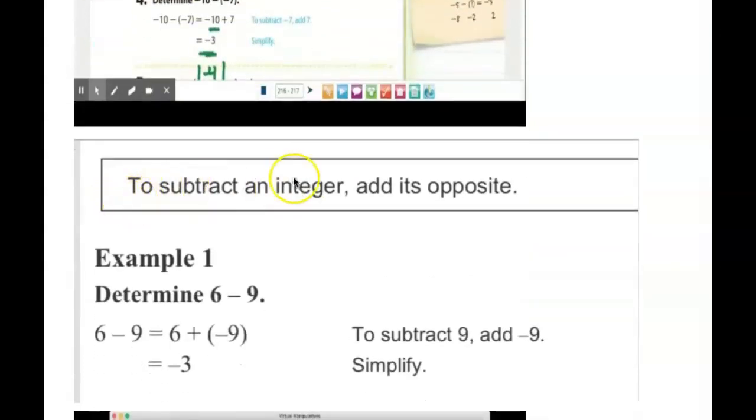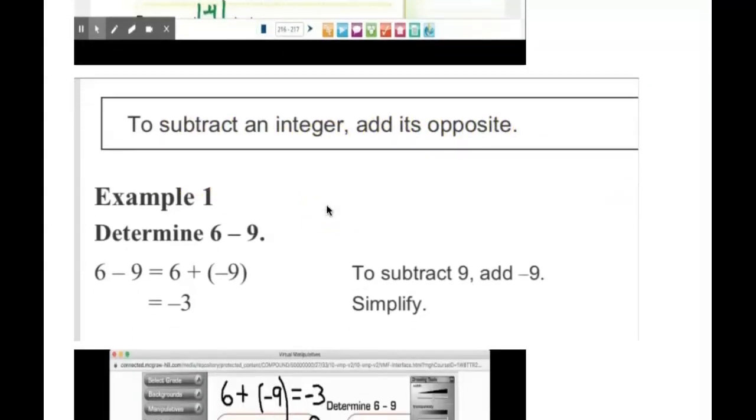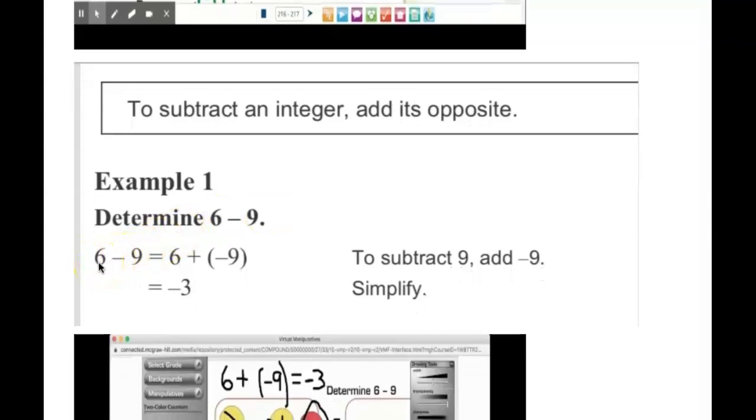The key phrase is to subtract an integer, you add its opposite. That's called additive inverse. Here's an example: if you have the question 6 - 9, we're going to change that to the equivalent expression of 6 + (-9). With negative 9 having a larger absolute value, the answer will be negative. 9 - 6 is 3, so the answer is -3.